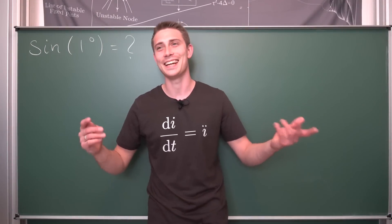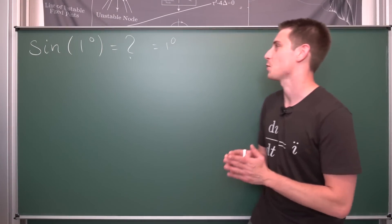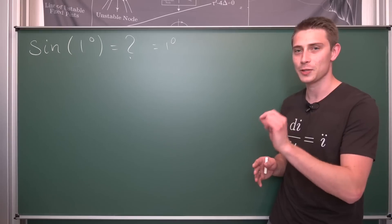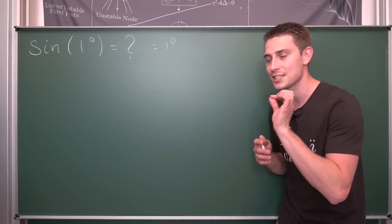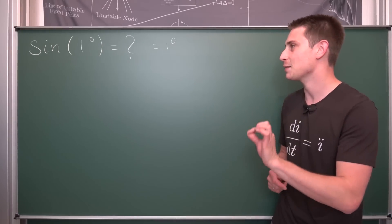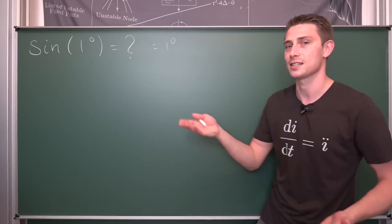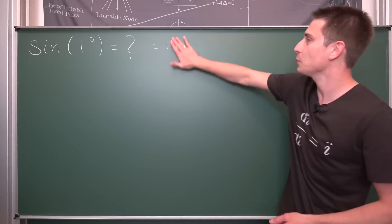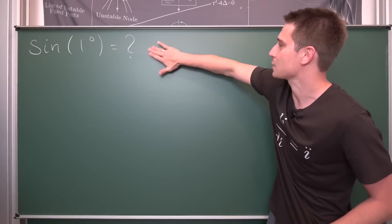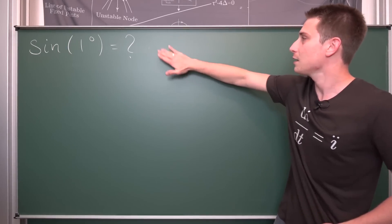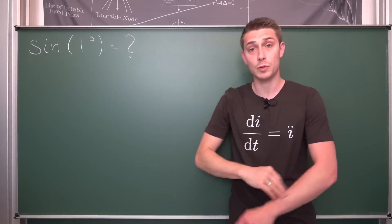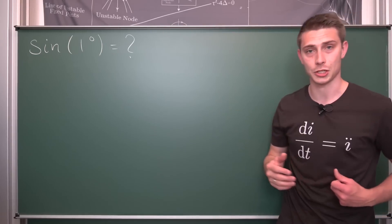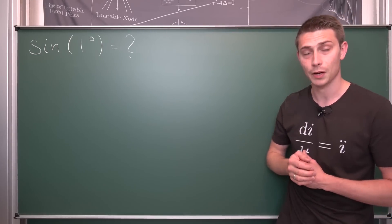Obviously, it's not just one degree. One degree is really small — basically really small. But we are going to do it a nice way. And for this, we are going to do the Euler expansion of the sine.